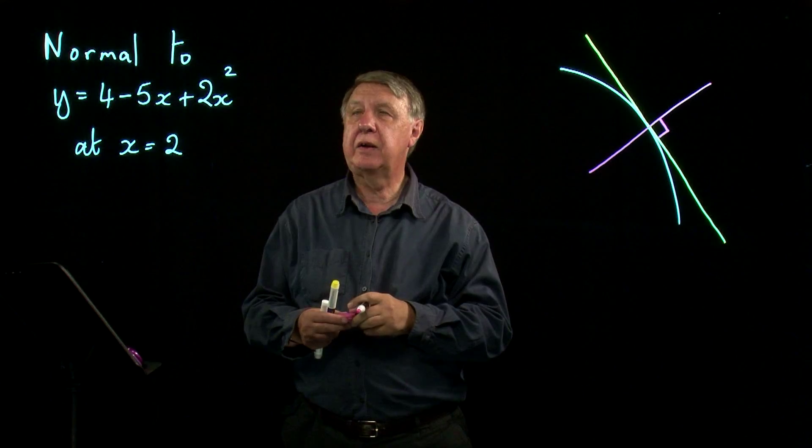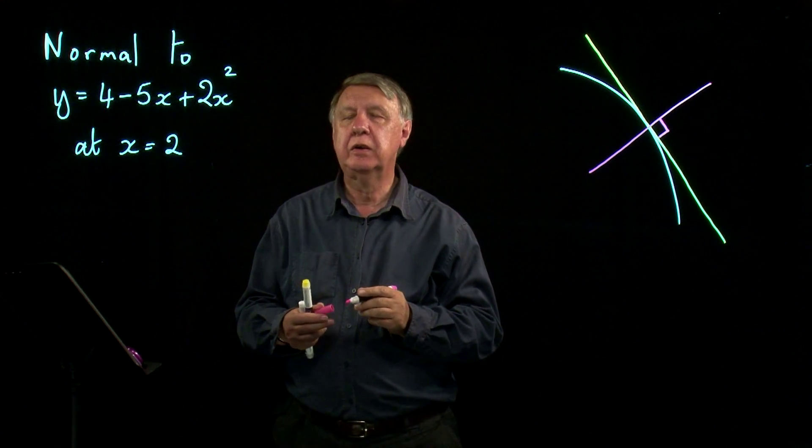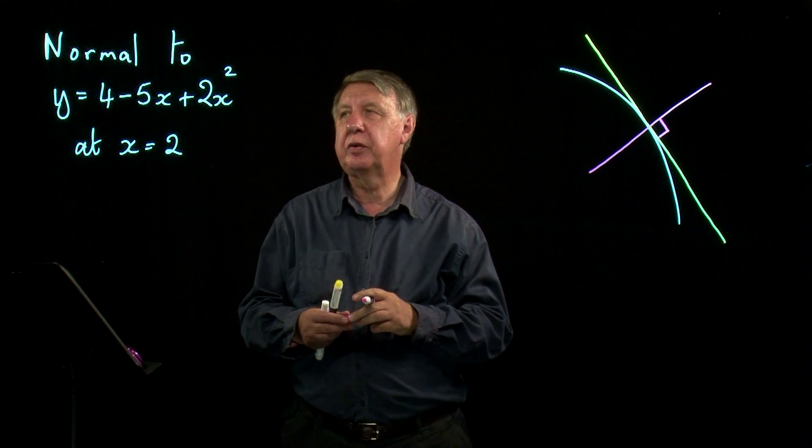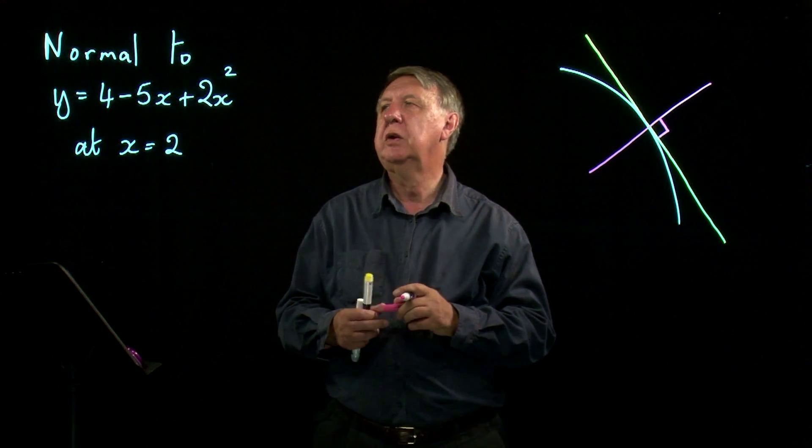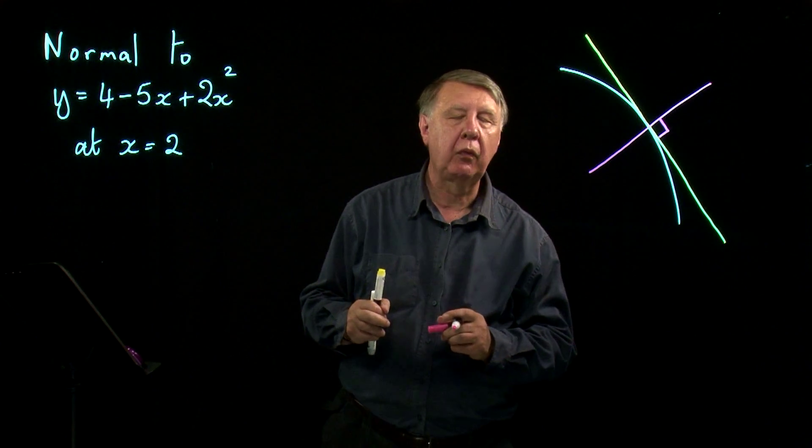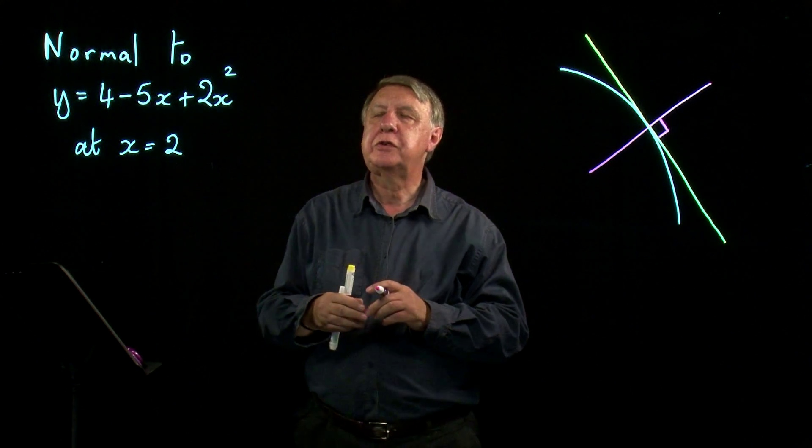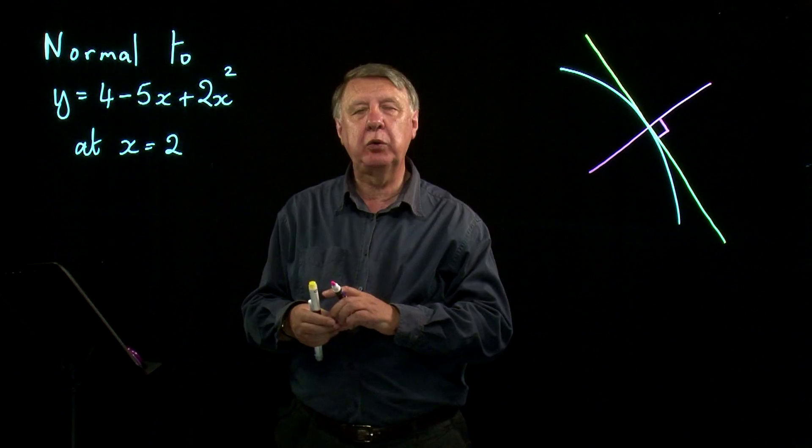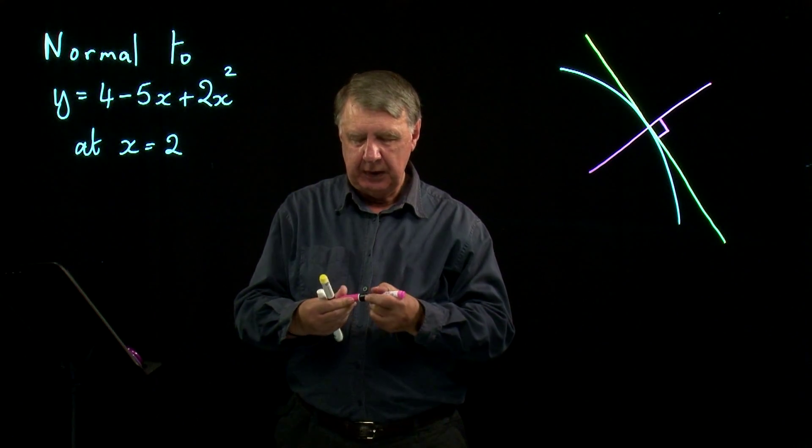And we use differentiation once again to solve the problem. So we want the equation of the normal to this curve when x equals 2. Now it's similar to the process of finding the equation of a tangent.